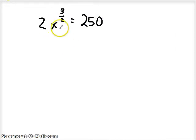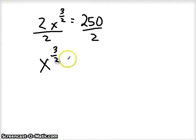To get x by itself, undo everything around it. So we've got to undo this multiplication by 2. Let's divide both sides by 2. 250 divided by 2 is 125.